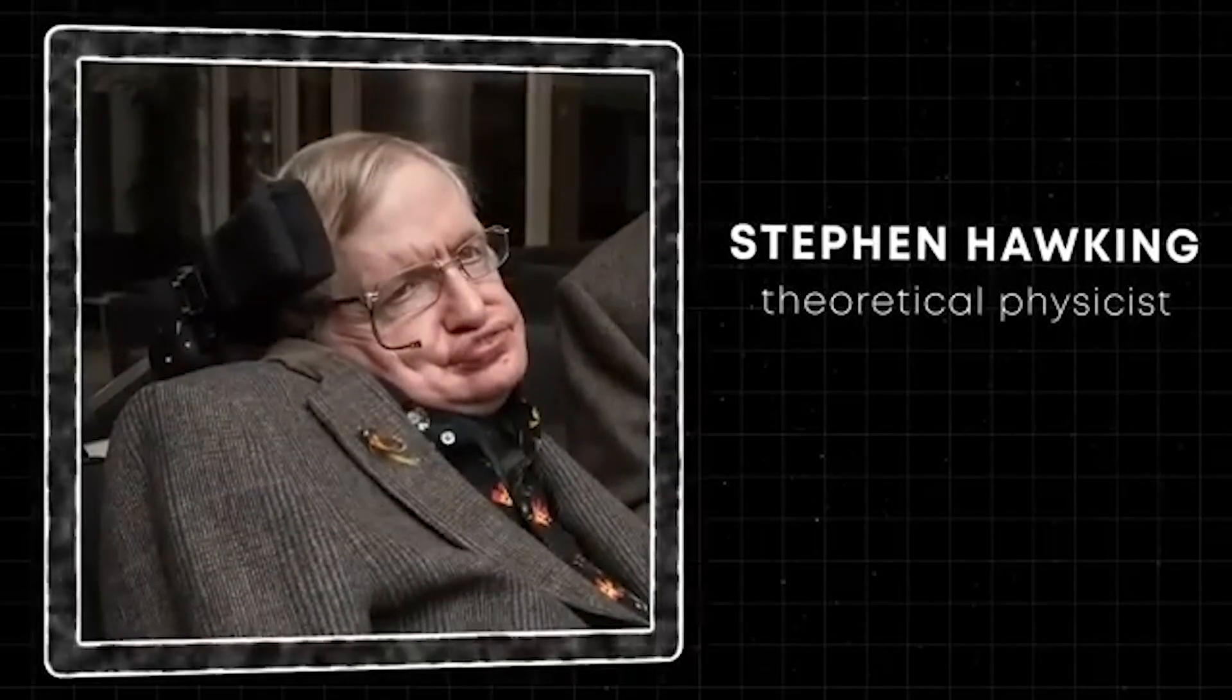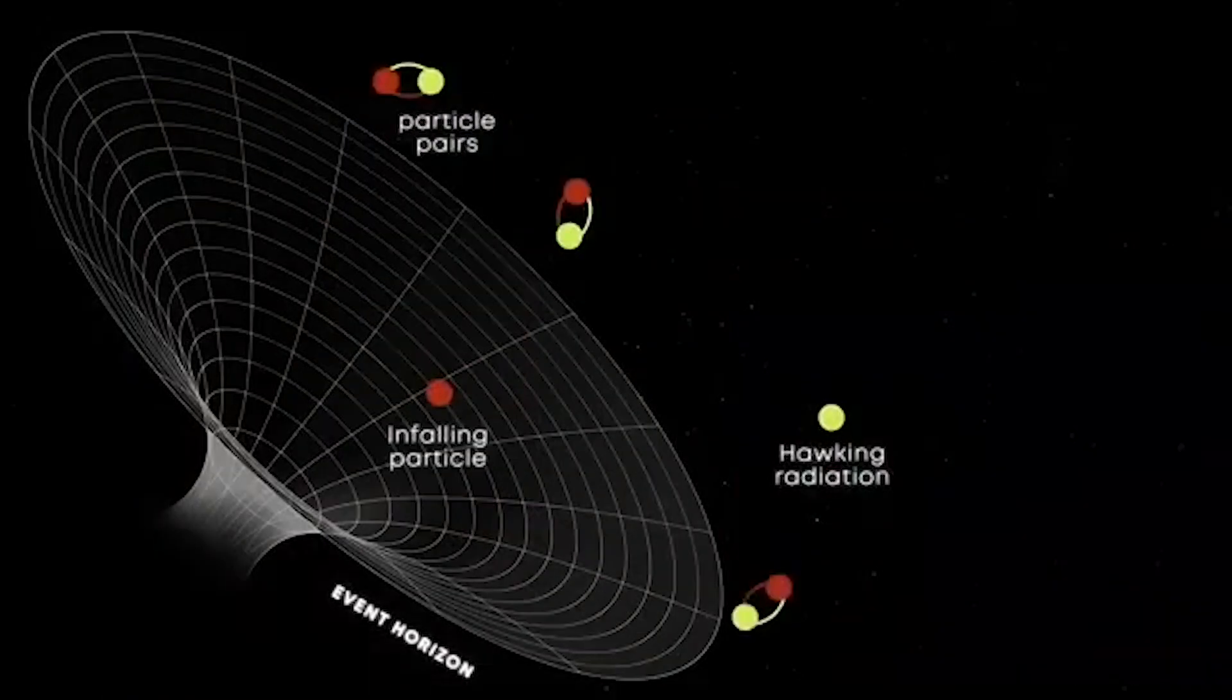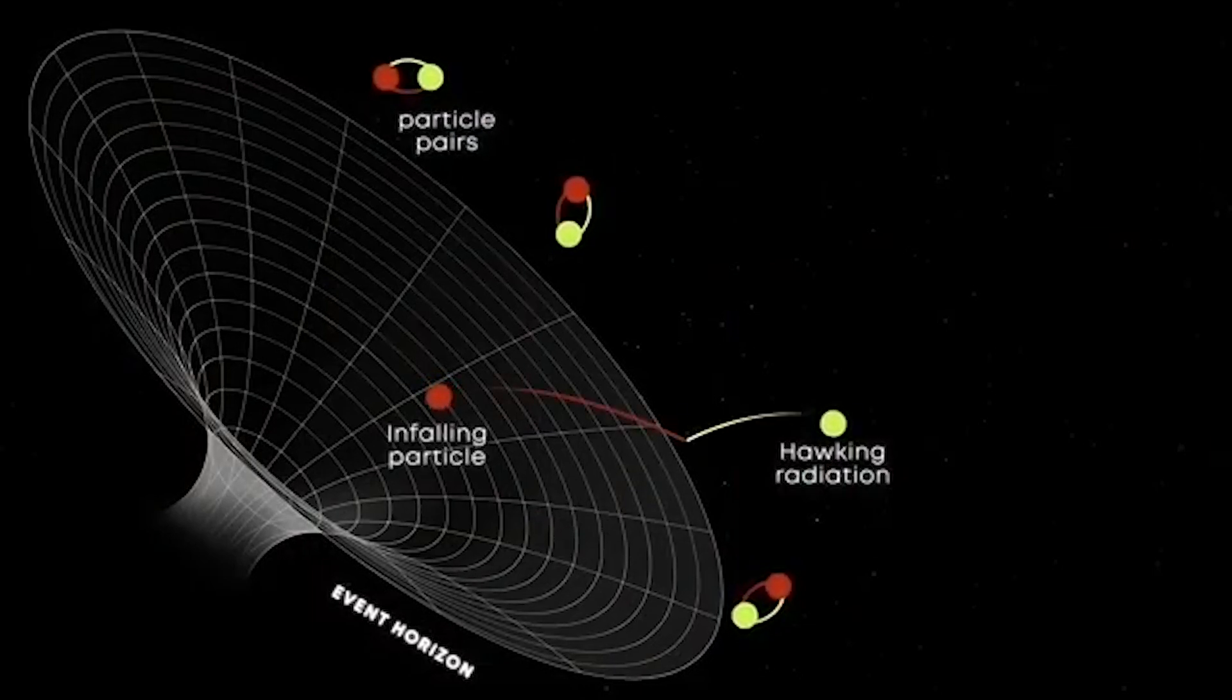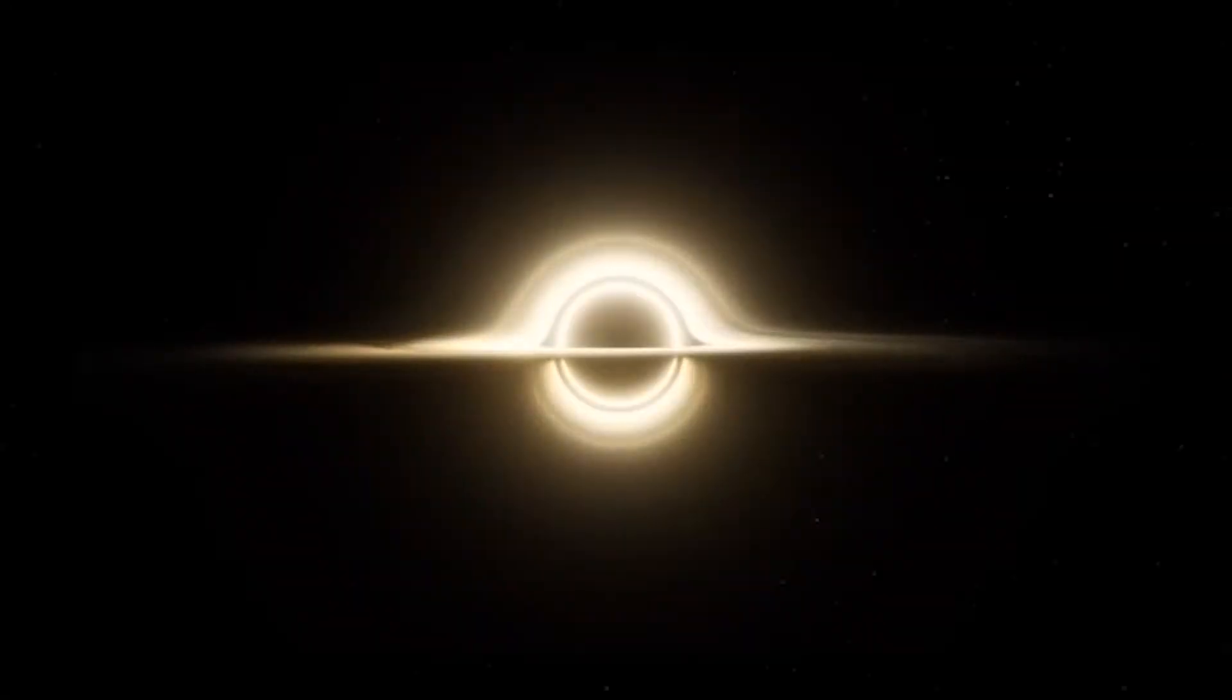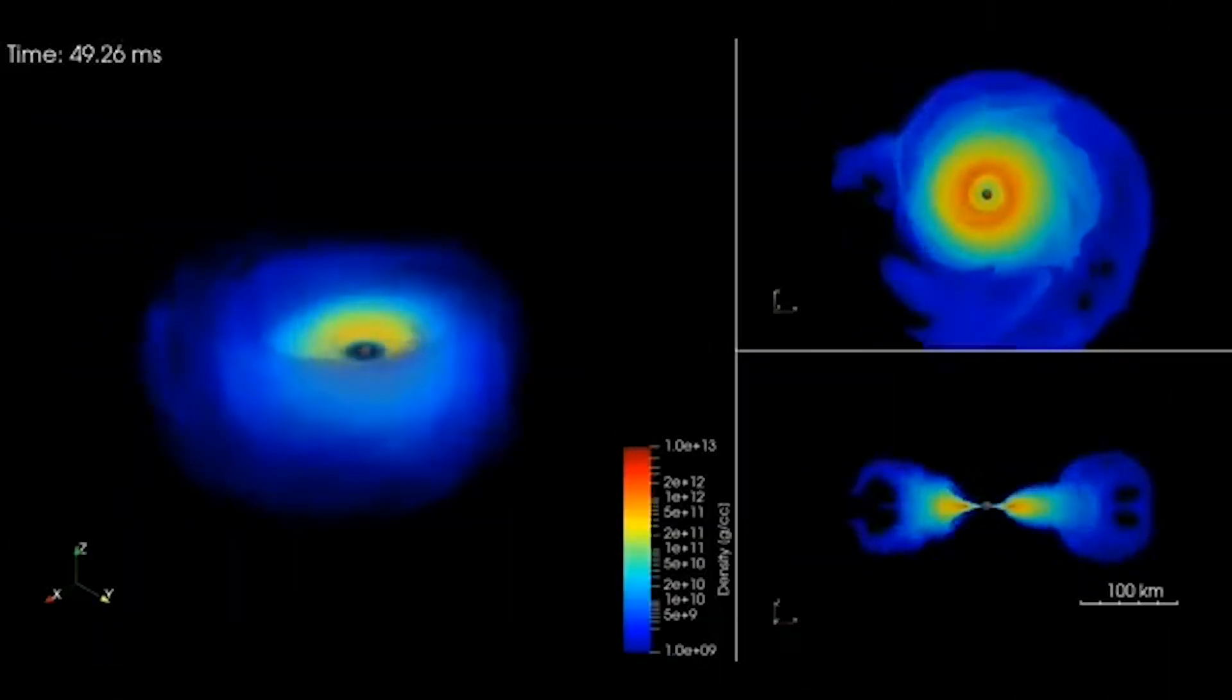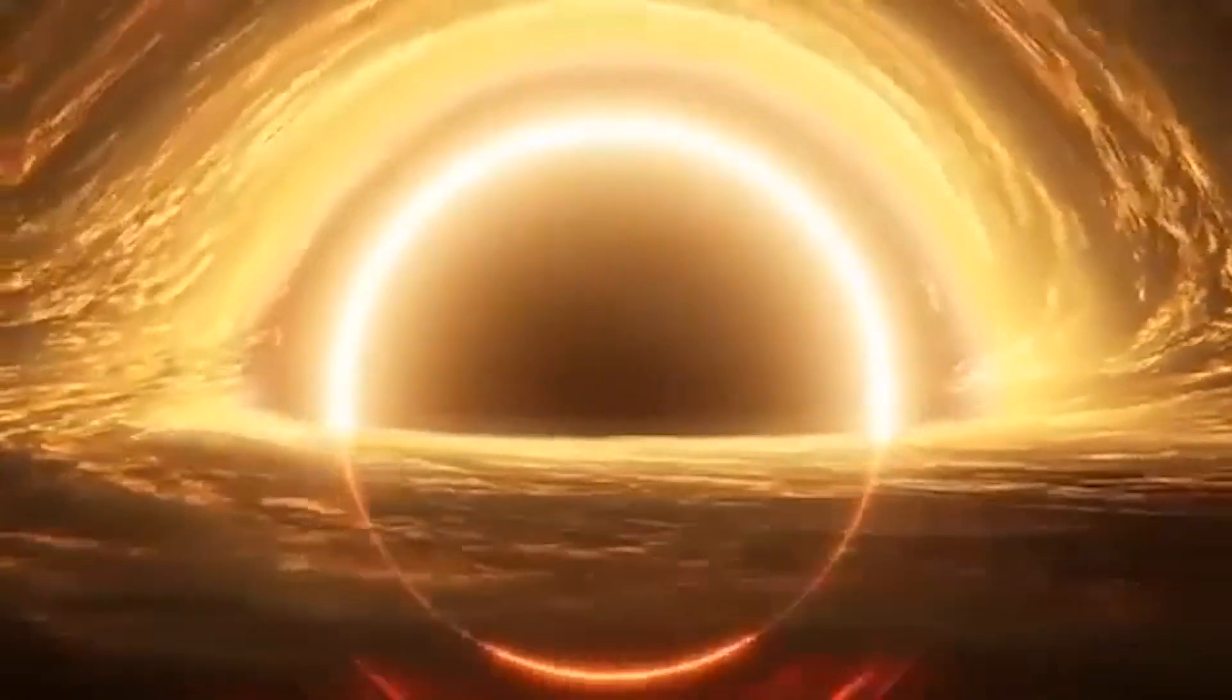In a groundbreaking discovery, Stephen Hawking introduced the idea of Hawking radiation, which completely changed how we think about black holes. According to this theory, black holes aren't eternal giants, but slowly lose mass by emitting tiny amounts of radiation over time. This gradual loss of mass means that eventually even the biggest black holes will evaporate and disappear.